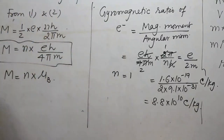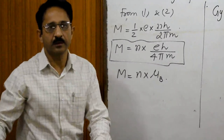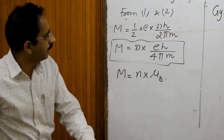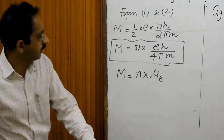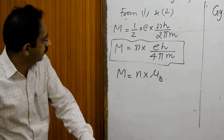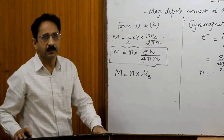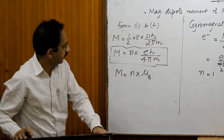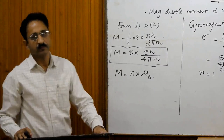So this is all about the current loop as a magnetic dipole. We have seen how to determine the magnetic dipole moment of electrons in the atom, determined the value of magnetic dipole moment, and also seen that the magnetic moment of an electron is a quantized quantity which is an integral multiple of the Bohr magneton. Thank you.